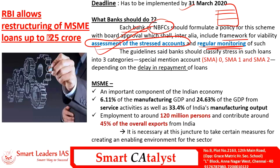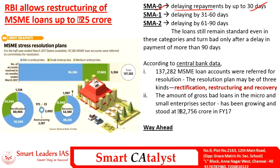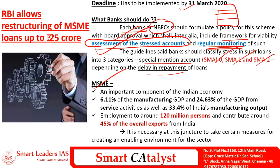Guidelines say banks should classify stressed loans into three Special Mention Account categories: SMA-0, SMA-1, and SMA-2, depending on delay in repayments. SMA-1 is when repayment is delayed between 31 to 60 days, and SMA-2 is when the delay is between 61 to 90 days. Importantly, even after restructuring, MSME loans remain standard assets and only turn bad after a payment delay of more than 90 days.